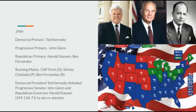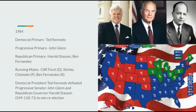Going on to 1984, Democrats nominate Ted Kennedy — a very popular, bipartisan president who increased government spending, essentially the Democrat version of Ronald Reagan. Progressives would nominate John Glenn and Republicans Harold Stassen. Running mates: Democrat Cliff Finch, Progressive Shirley Chisholm, Republican Ben Fernandez. Democrat President Ted Kennedy would defeat Progressive Senator John Glenn and Republican Governor Harold Stassen, 349 to 118 to 71, to win re-election.